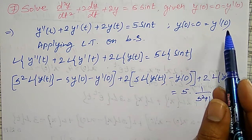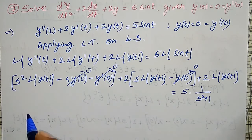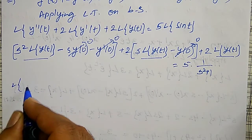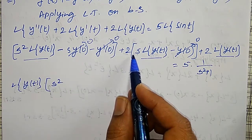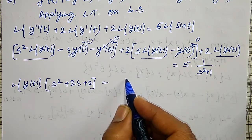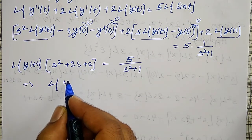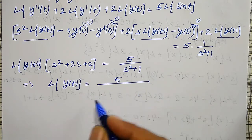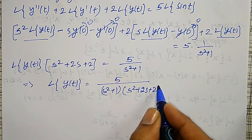Using y(0) = 0 and y'(0) = 0, those terms become zero. Taking L{y(t)} common from the remaining terms, I get L{y(t)} · (s² + 2s + 2) = 5/(s² + 1). Therefore L{y(t)} = 5 / [(s² + 1)(s² + 2s + 2)].